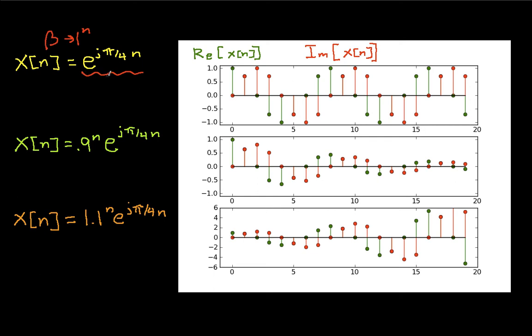So this complex exponential, if I have no constant out in front raised to the n, is just basically a cosine combined with a sine. If I have the case where beta here is 0.9, then the real part looks like this. It starts at 1, goes down, and you can see that the real part, the amplitude of the real part is getting smaller. In the imaginary part, the same thing happens. The amplitude starts out big and then gets smaller. And that's because beta being less than 1, as we raise beta to higher and higher powers, it gets smaller and smaller.